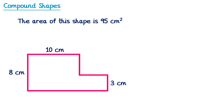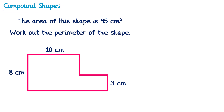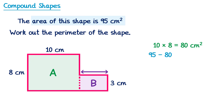Finally, let's look at a tricky exam-style question. We have a compound shape, and we're told its area is 95 centimeters squared — we're asked to work out the perimeter. We split it into rectangle A and rectangle B. The area of rectangle A is 10 multiplied by 8, which is 80. We don't know the width of rectangle B, but since the total area must be 95, we do 95 subtract 80, which leaves 15. So the area of rectangle B is 15. Since its height is 3, we do 15 divided by 3, giving us a width of 5 centimeters.